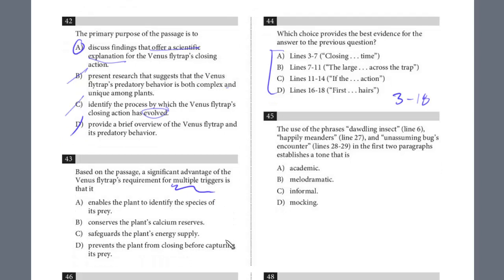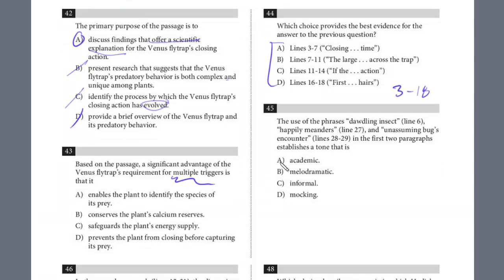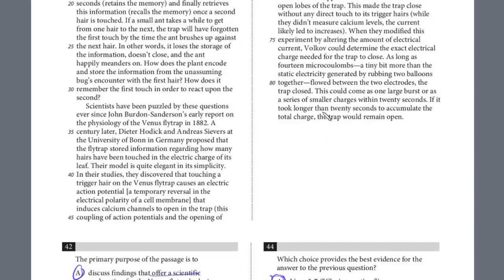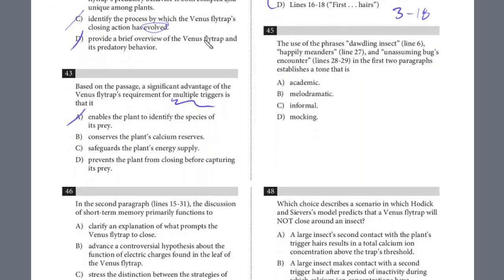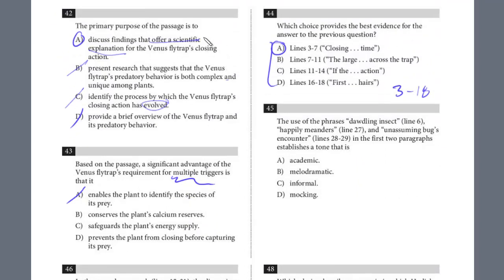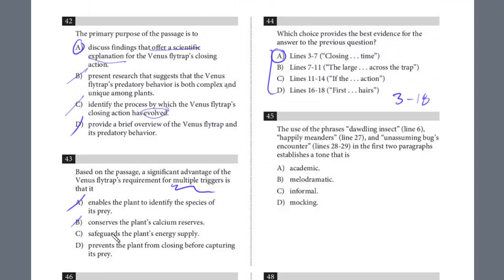So this looks to be the evidence right away. We could probably predict it just from reading that first paragraph, just understanding the passage. If we think the evidence is lines 3 to 6, 44 is A, right? It's a huge expense of energy to close the trap. What's the advantage? Enables the plant to identify the species of its prey. We don't know what the prey is. The flytrap just knows the size. Conserves the plant's calcium reserves. Is that the advantage? It's conserving the reserves. That's not really accurate in that first line. We read that, let's just go back to 3 through 6. It just says a huge expense of energy. It doesn't say anything about the calcium reserves, even though that was mentioned in a different part of the passage. Safeguards the plant's energy supply. This is the answer. This is the advantage. It doesn't just do it indiscriminately. It wants to conserve energy. So the advantage is it safeguards the plant's energy supply.